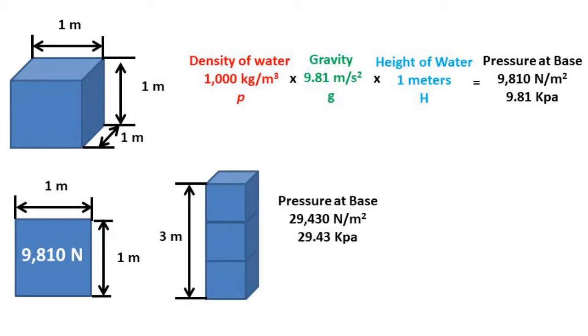So if we were to stack three of these cubes of water on top of each other, we would have three times the pressure at its base, or in this case 29,430 newtons per meter squared.